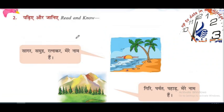The other names of the seas: Sagar, Samtra, Atnakar, Meran — these are the names. The another names of the seas are Sagar, Samtra, and Atnakar.